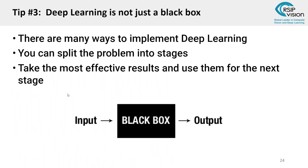General Tip 3: Deep learning is not just a black box. There are many ways to implement it, and visual understanding is still needed. You can also split the problem into stages. Even in automotive, where it's almost 100% machine learning-based, nobody tries to create one massive network that takes in video and sensors and spits out steering wheel angles. The solution is still split into explainable modules — one for lane detection, one for car detection — making it easier to debug and creating more effective overall solutions.